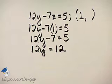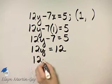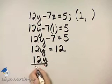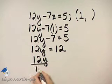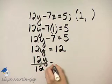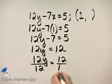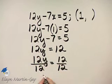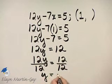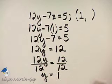And then how do we solve for y? We take the left side and we divide by the coefficient of y, which is 12. And if I do that on the left side, I've got to do that on the right side. And I have y is 12 over 12, or 1.